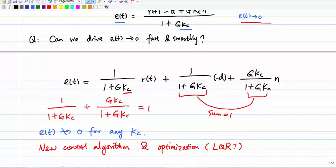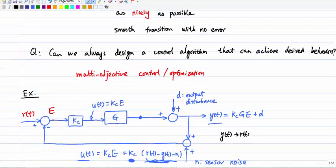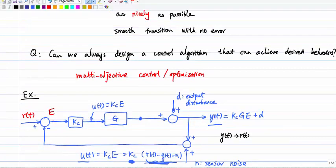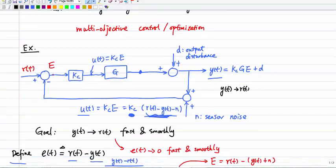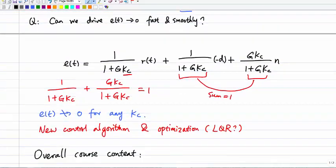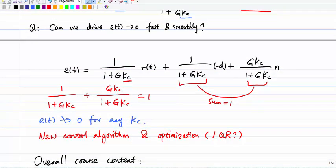This proportional control has fundamental limitations. To overcome them, we need a new control algorithm — perhaps an optimization-based approach such as the LQR (Linear Quadratic Regulator). After taking this course, you'll understand LQR: given a cost function, you can minimize it in a certain way. It doesn't guarantee e(t) goes exactly to zero, but you can reduce it.